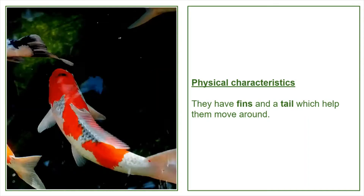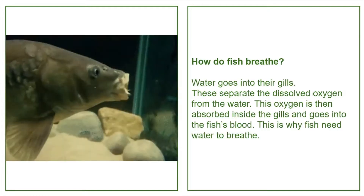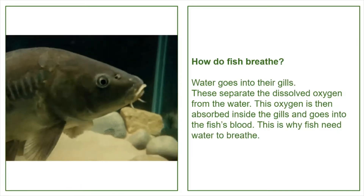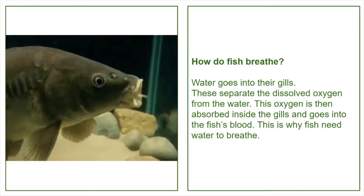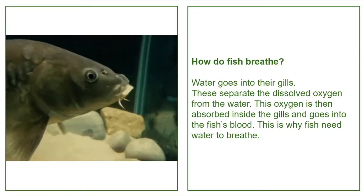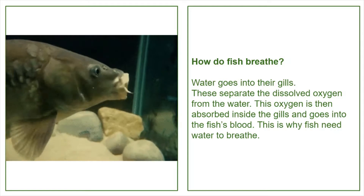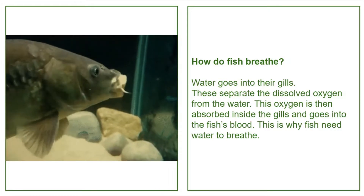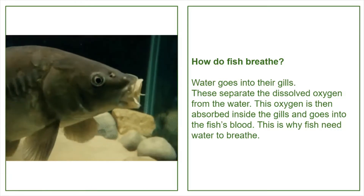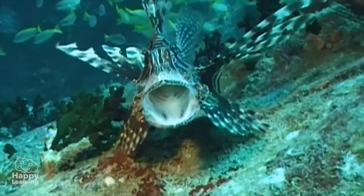Respiration: they breathe with their gills. Physical characteristics: they have fins and a tail which help them move around. Their skin is covered in scales which protect their body. How do fish breathe? Water goes into their gills, which separate the dissolved oxygen from the water. This oxygen is then absorbed inside the gills and goes into the fish's blood. This is why fish need water to breathe.